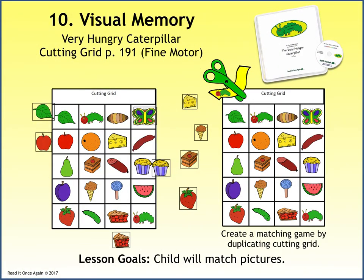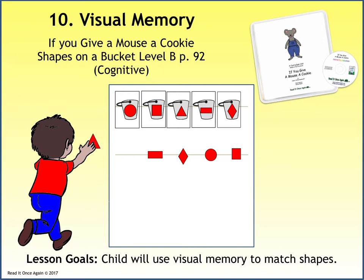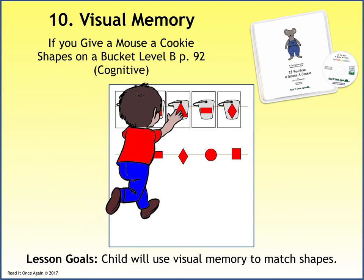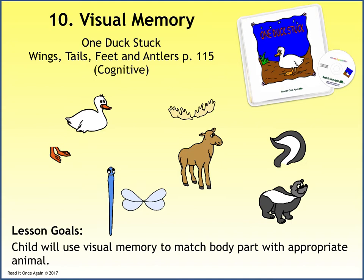A cutting grid activity from The Very Hungry Caterpillar can be used to practice visual memory skills by creating a matching game — duplicating the cutting grid, cutting apart the object squares, and instructing the child to match the pictures. A Shapes on a Bucket Level B activity from Big Red Barn has children practice visual memory by matching shapes to the correct bucket. The What's Missing activity from Big Red Barn takes visual memory to a more difficult level — showing a barn with a weather vane, then showing only the barn, and asking: What's missing? The Wings, Tails, Feet, and Antlers activity from One Duck Stuck requires children to use visual memory to match body parts to the appropriate animal.